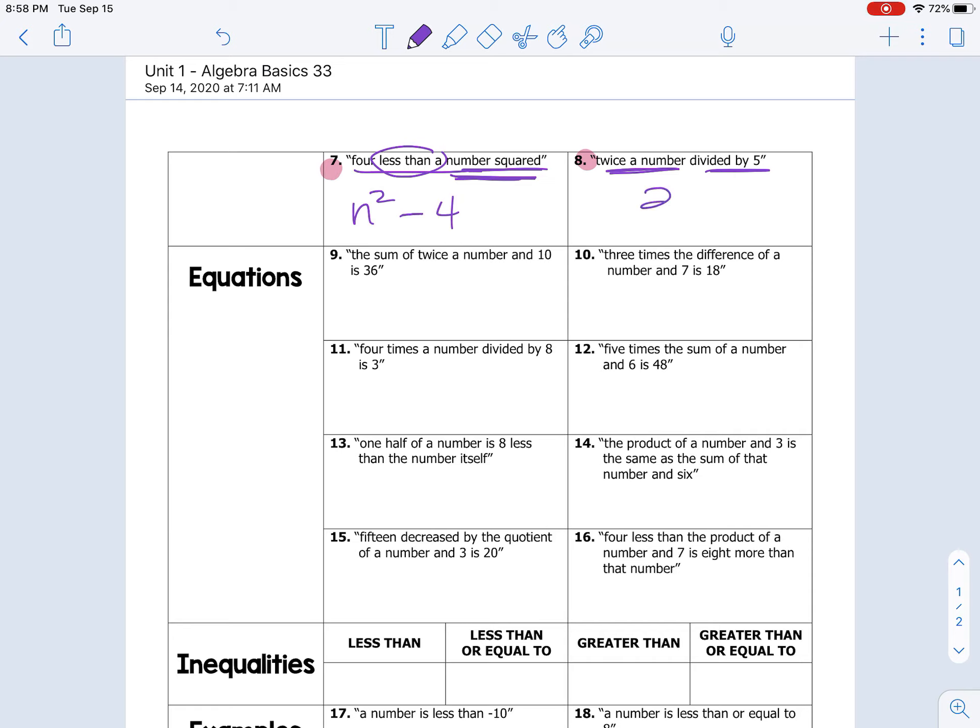Twice a number divided by five. Twice a number, remember, is two times a number. Two times a number divided by five can be written this way, or 2n divided by five can also be written this way.